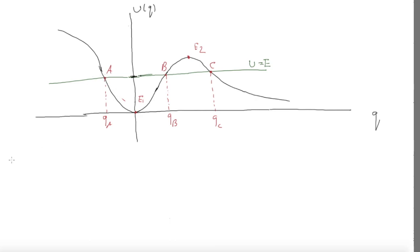The system starts moving backwards — so this point A is called a turning point. The system rolls backwards, goes further, shoots up to B, again runs out of kinetic energy, and has to turn backwards. So B is another turning point. As you can see, if you started somewhere between A and B, the system is going to oscillate from A to B, back and forth, with some time period T.